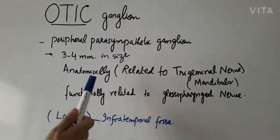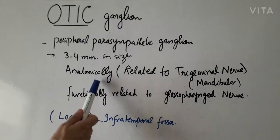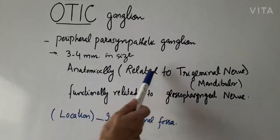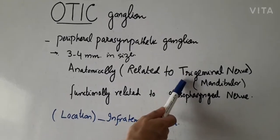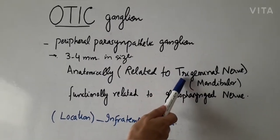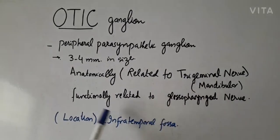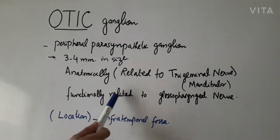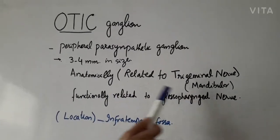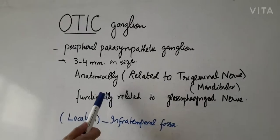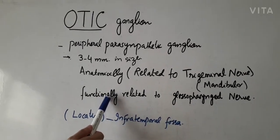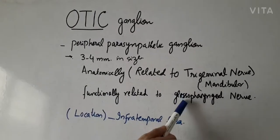We will study it topographically, meaning anatomically and structurally. It is related to the mandibular division of the trigeminal nerve — it is attached with it. But functionally, it is related to the glossopharyngeal nerve, meaning the parasympathetic roots come from the glossopharyngeal nerve.